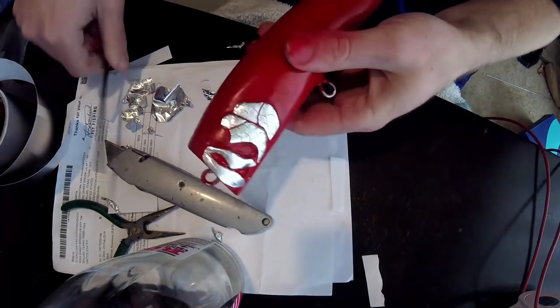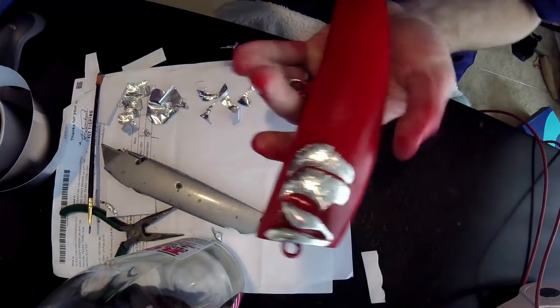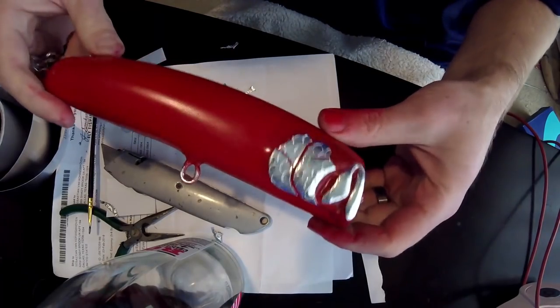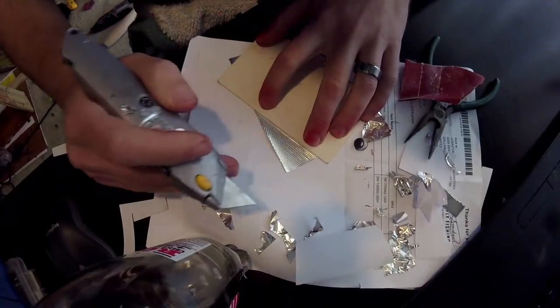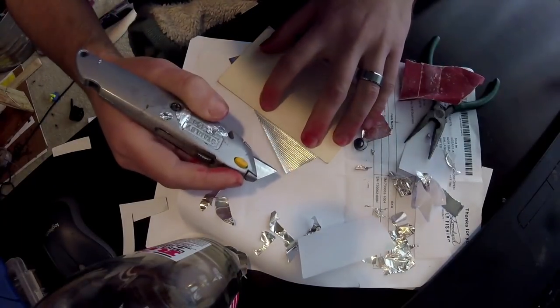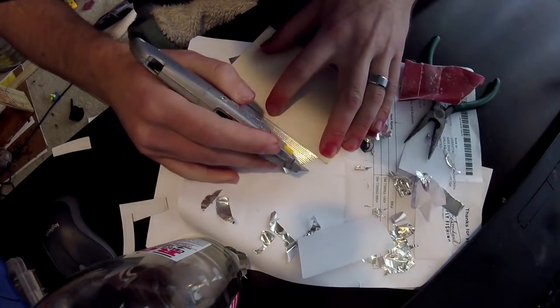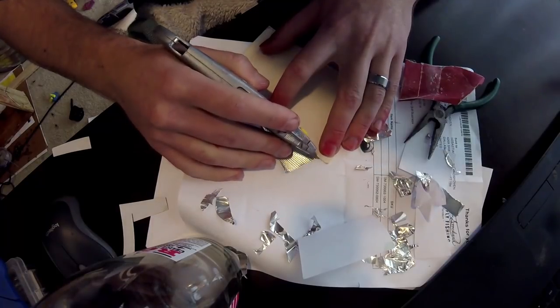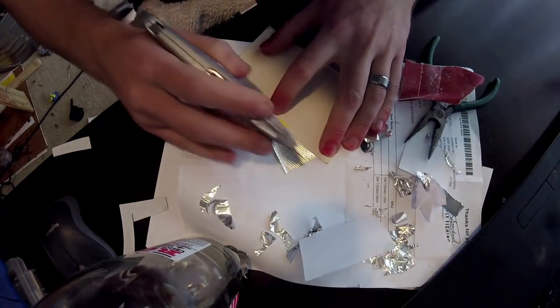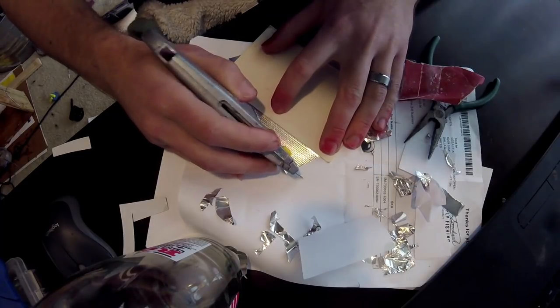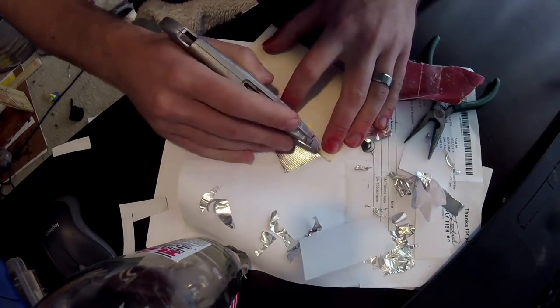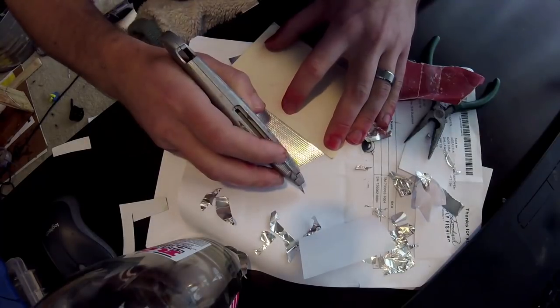It's essentially an exacto knife blade bent in a half circle shape around a screw and then fixed onto a brush holder. Sounds very difficult, it's much simpler. That pretty much is a half moon shape and allows us to make exact copies of each scale that we press into the foil.